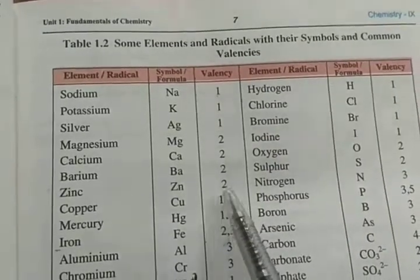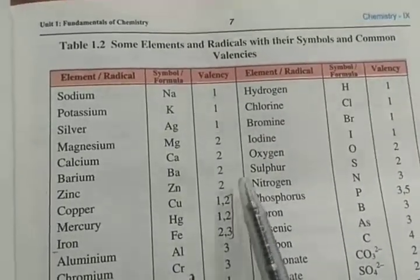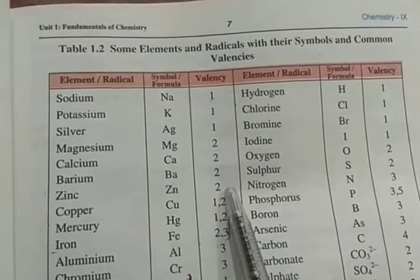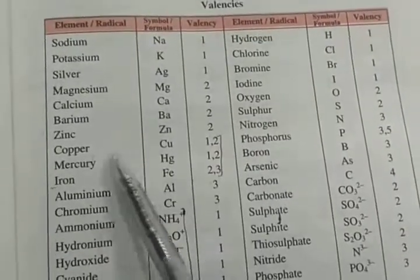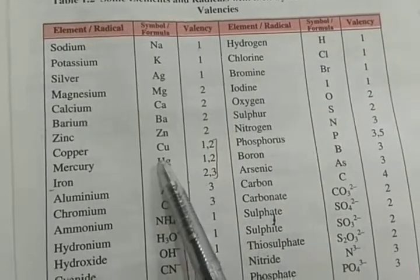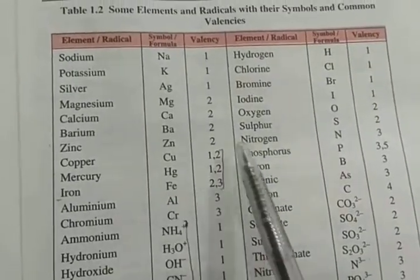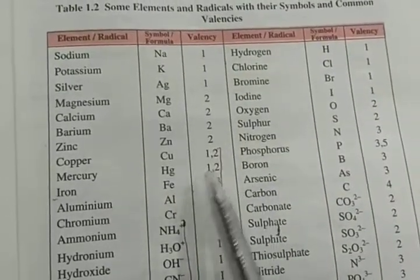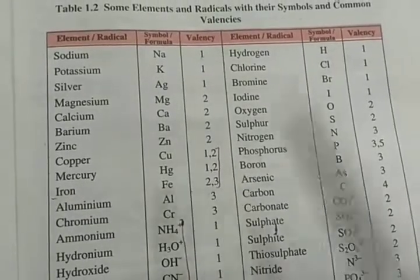Magnesium, calcium, barium, zinc - valency is 2 because their outermost shell has two electrons which can be lost. Now, look at copper and mercury. They have two valencies: copper shows 1, 2; mercury shows 1, 2; and iron shows 2, 3.